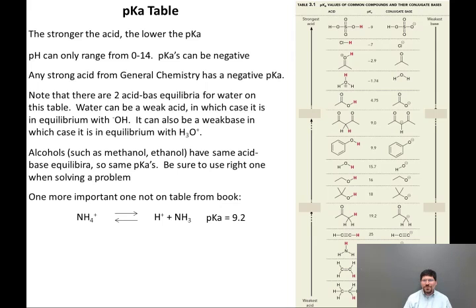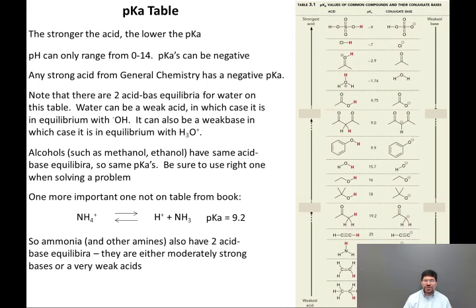One more important equilibrium that's not on the table from the book is that of NH4+, ammonium ion, being in equilibrium with H+ plus NH3. And the pKa of this is 9.2. So ammonia and other amines also have two acid-base equilibria, just like water does. So they're either moderately strong bases, the pKa for NH4+ is 9.2, or very weak acids. NH3 can act as an acid to lose a proton and give NH2-, that pKa is 38. The equilibrium constant is 10 to the negative 38. It really doesn't want to happen. NH2- is a very strong base.